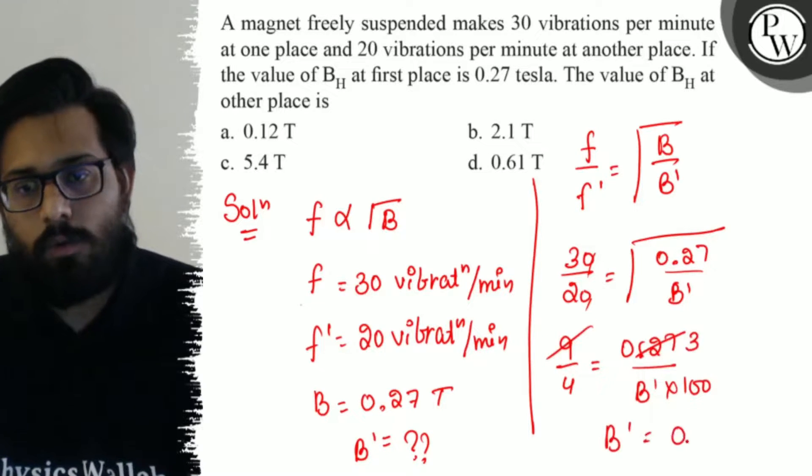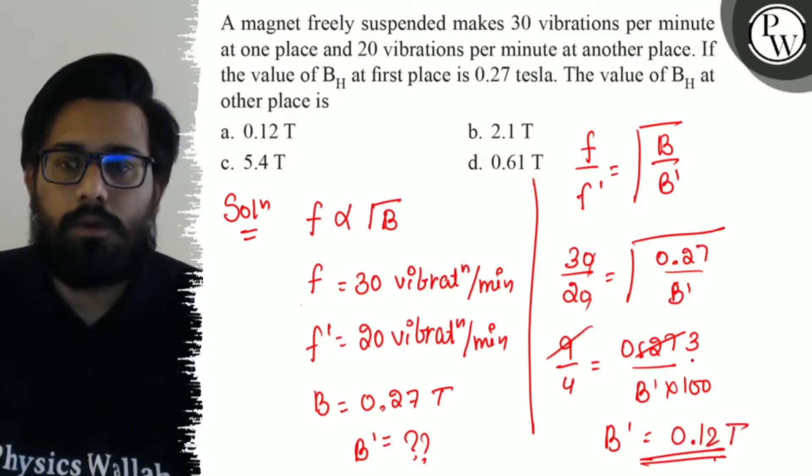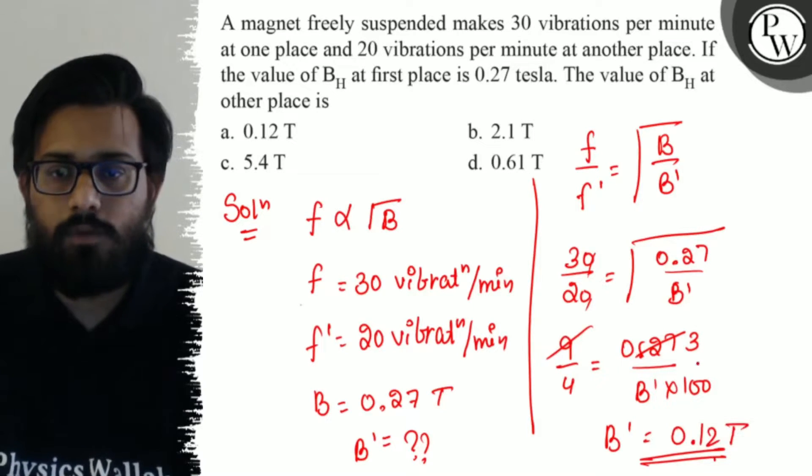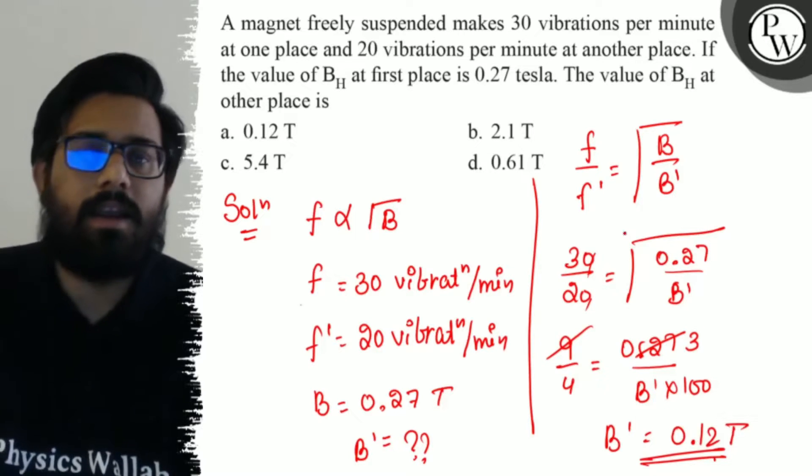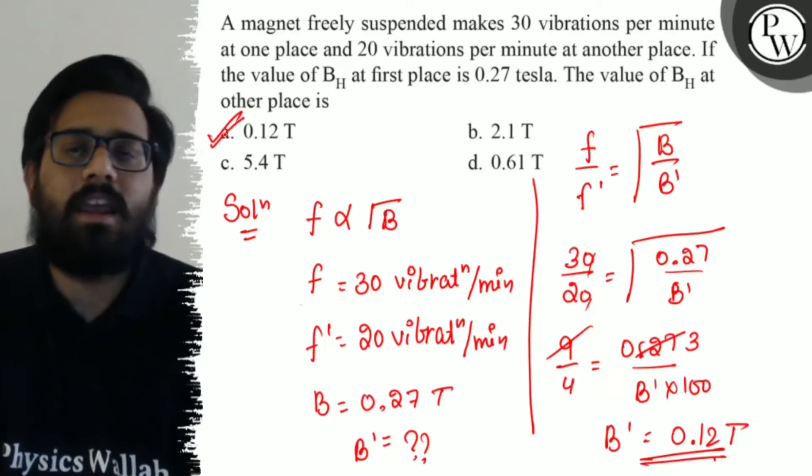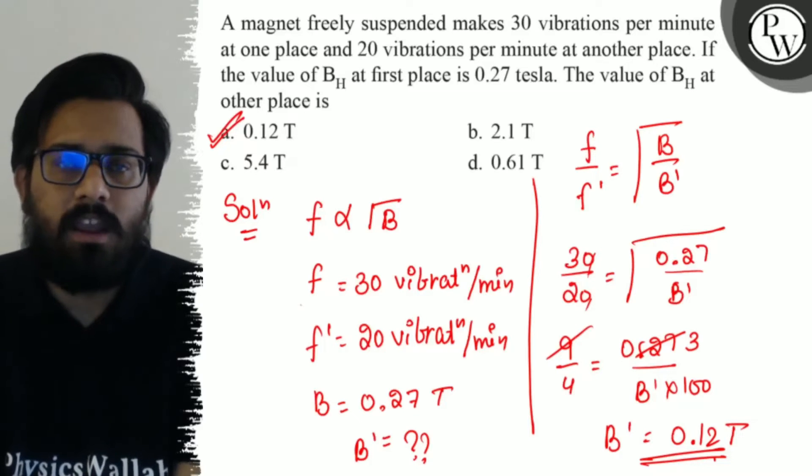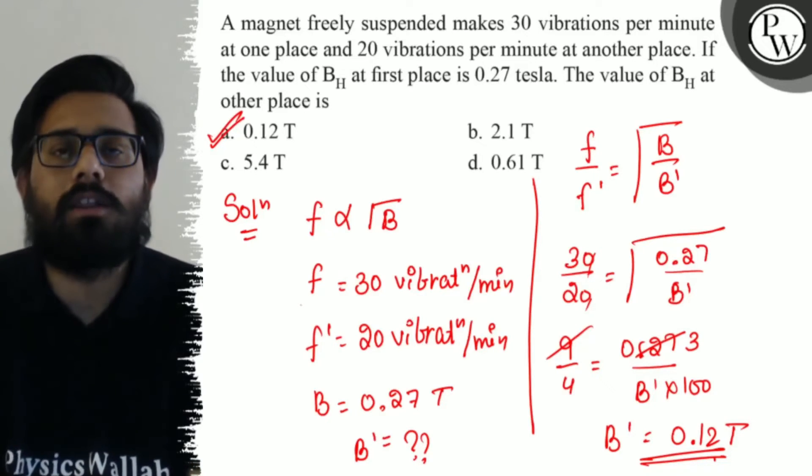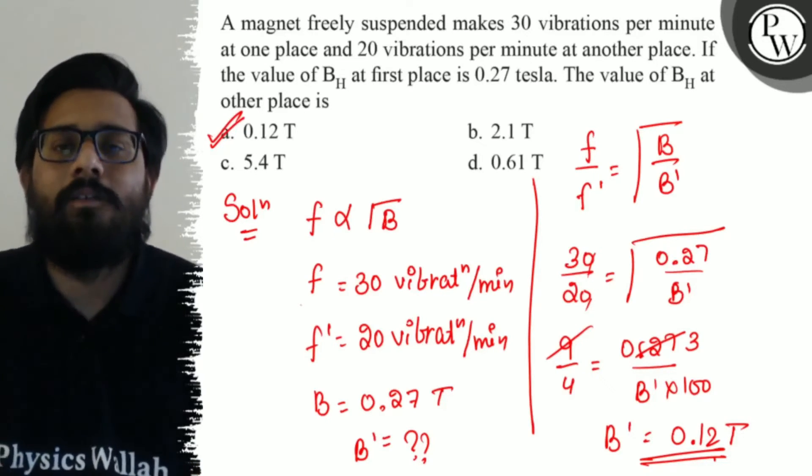Okay, if 4 is the result, B' is equal to 0.12, which is 12 upon 100, that is 0.12 tesla, which matches option A. So option number A is absolutely correct and I hope you get the concept of this question.